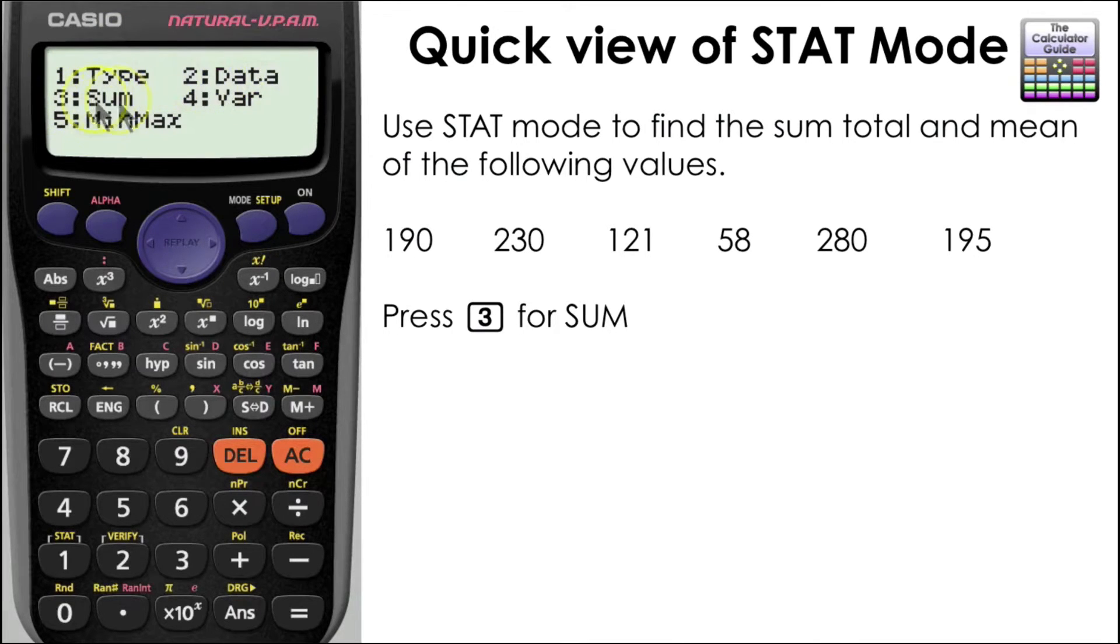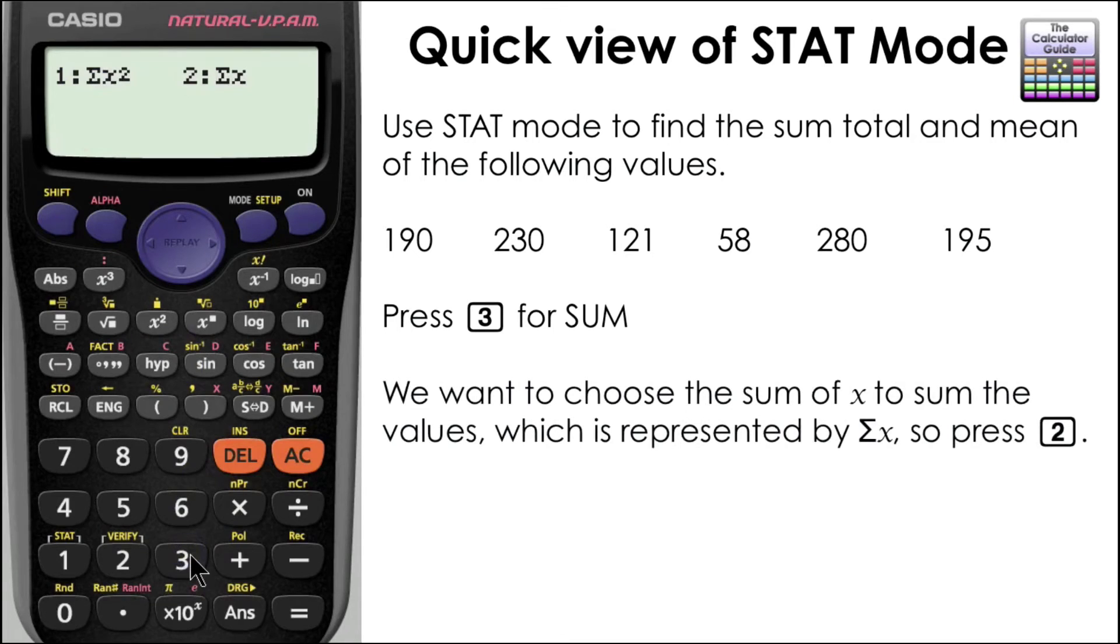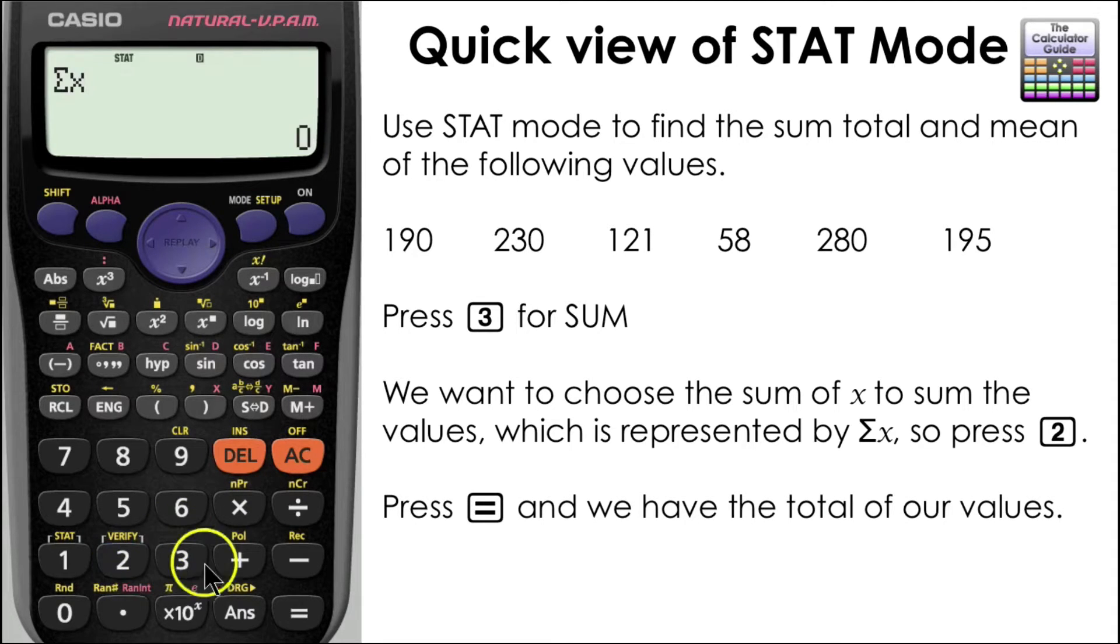But we're going to press 3 for sum. Now we see two options here, sum of x squared or the sum of x. Now we're going to choose sum of x. We can see that represented here with the Greek letter sigma, which you might have encountered before on Microsoft Excel. Press equals, and here we have our total of the values, 1074.